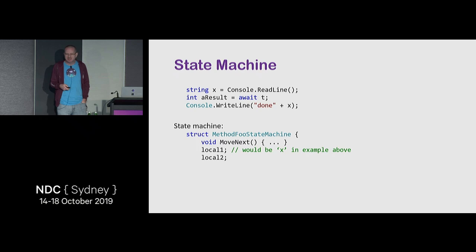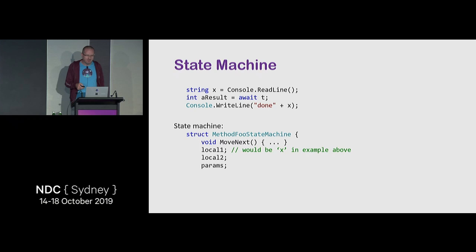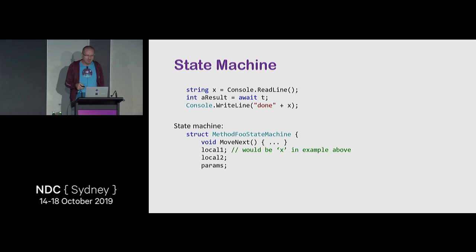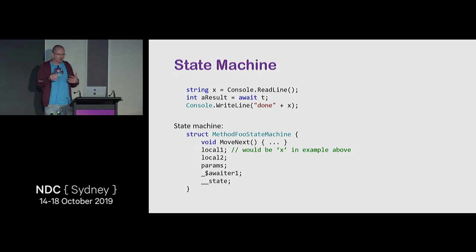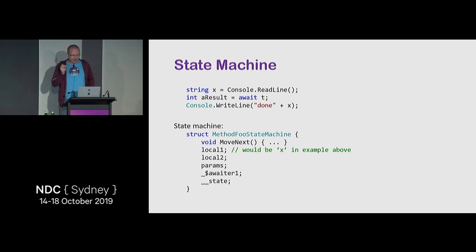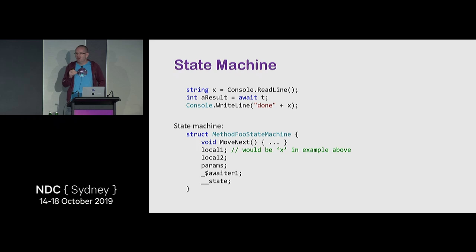Not surprisingly, the compiler optimizes: if a local doesn't cross the await boundary, it won't be stored in the state machine. The state machine is a struct for performance reasons. In debug mode however it's a class, because finding structs on the heap and enumerating what's in-flight from a dump is extremely difficult.